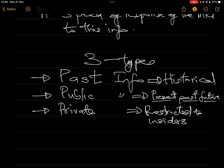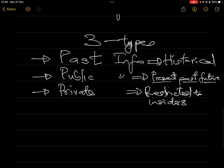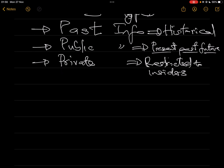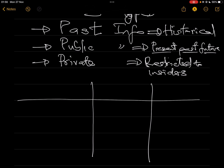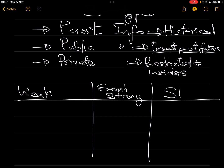Based on these types of information, the market is now categorized. The type of information a particular market has — whether it is past, public, or private — determines the efficiency of that market. That is why we now have three types of market efficiency. The first type is the weak market, the second is the semi-strong market, and the third is the strong market. In a weak market, the only information available is past information.